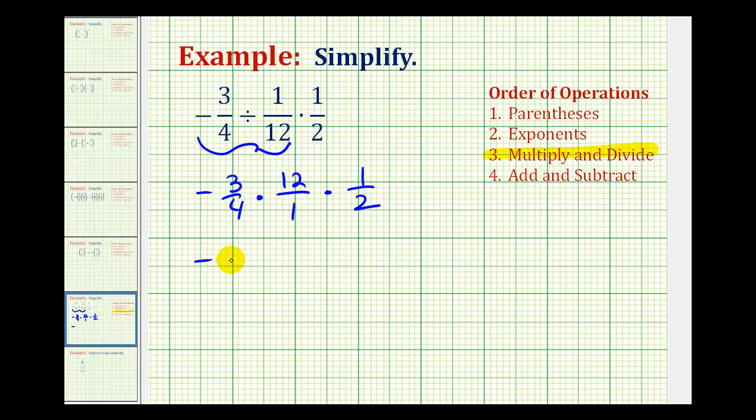So we'd have negative, well, three is prime. The prime factorization of four is two times two. The prime factorization of 12 is two times two times three. And then we have one and then two is prime.